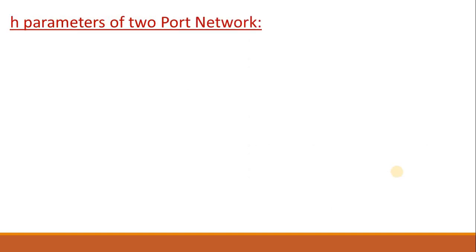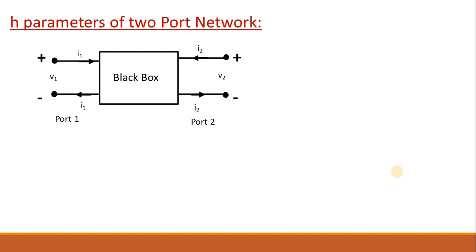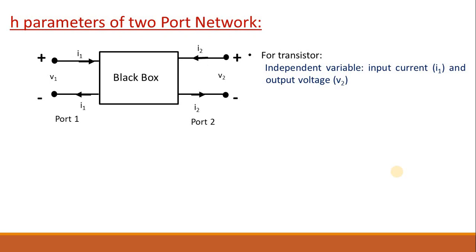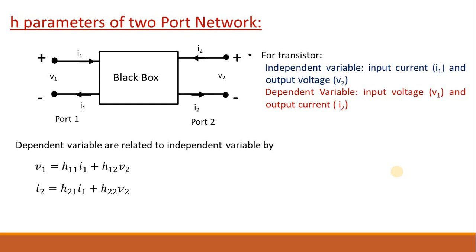For transistor purposes, we will mainly focus on H-parameters. So what is an H-parameter? In our two-port network, if we choose input current I1 and output voltage V2 as independent variables, and input voltage V1 and output current I2 as dependent variables, they can be represented as: V1 = H11·I1 + H12·V2, and I2 = H21·I1 + H22·V2. So H11, H12, H21, and H22 are the parameters we call H-parameters.